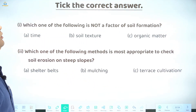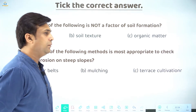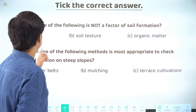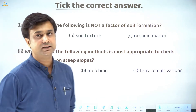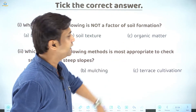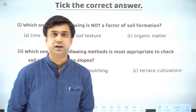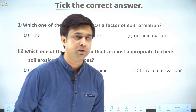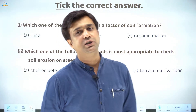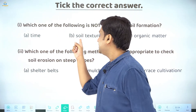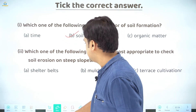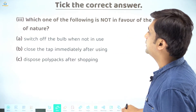MCQ: Which one of the following is NOT a factor of soil formation? Time provides maturity to soil. Organic matter forms humus and is essential for soil. Soil texture has no role in soil formation. So your answer is B — texture. That is your answer.